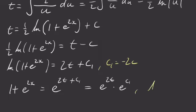So I'm going to let a new variable a equal e to the c1. And this is going to be nice because I get 1 plus e to the 2x equals a e to the 2t.